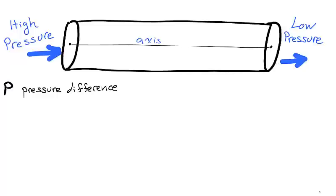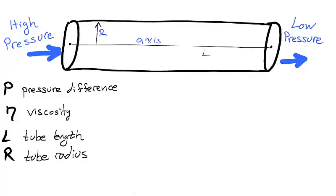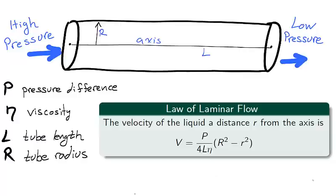Let P represent the pressure difference between the left and the right end of the tube. Let eta represent the viscosity of the liquid. Let L represent the length of the tube. And let R represent the radius of the tube. The law of laminar flow gives the velocity of a liquid a certain distance, little r, from the axis.